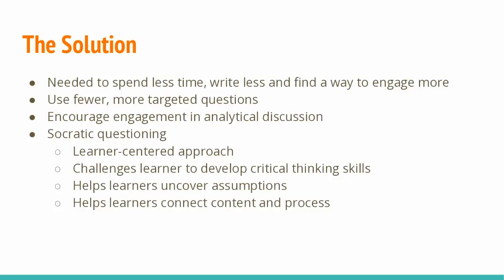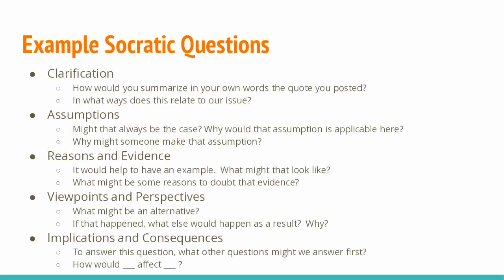This form of questioning can be used to create exploratory conversations that help students uncover assumptions and analyze complex concepts. Socratic questioning can also help students connect content and process — something a lot of students struggle with, from the bachelor level all the way to the doctoral level. Socratic questioning is done via five categories of probing questions that address clarification, assumptions, reasons and evidence, viewpoint or perspectives, and implications and consequences. One of my favorite example questions is: 'How would you summarize in your own words the quote you posted?' That's asking the student to clarify. A lot of students in discussion boards like to just plop in a quote from an article or textbook, and this helps them engage more deeply.